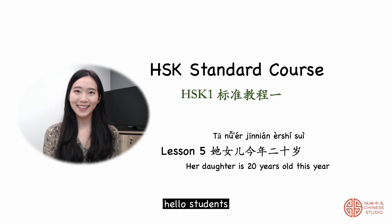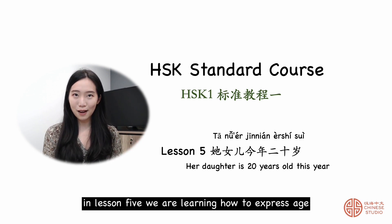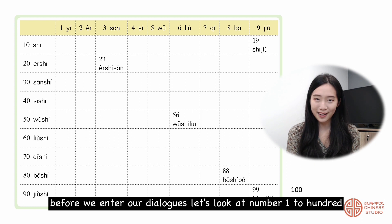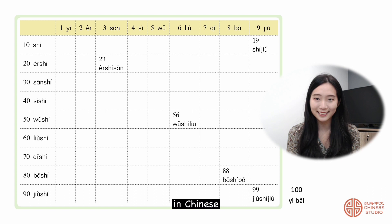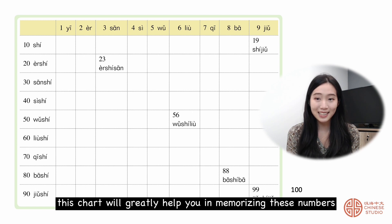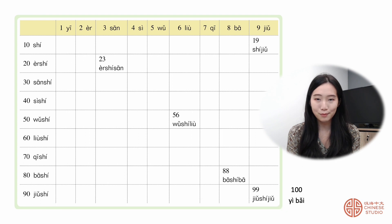Hello students! In lesson 5, we are learning how to express age. Before we enter our dialogues, let's look at numbers 1 to 100 in Chinese. This chart will greatly help you in memorizing these numbers. Please read after me.